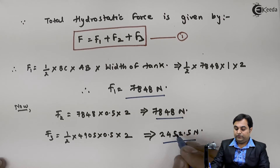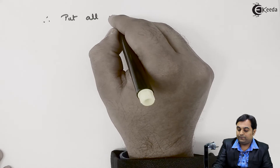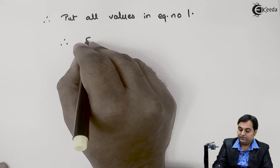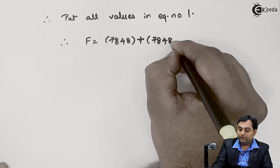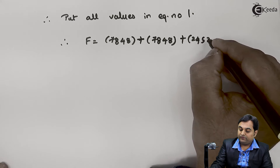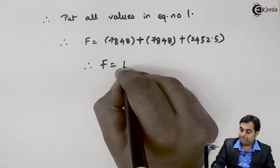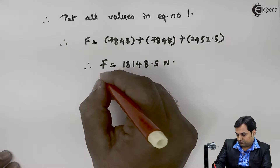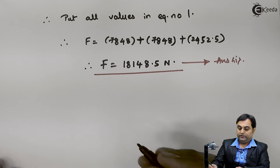Once we know F1, F2, and F3, we put all values into equation 1 to get the total hydrostatic force. F = F1 + F2 + F3 = 7,848 + 7,848 + 2,452.5 = 18,148.5 Newton. This is answer number 1.